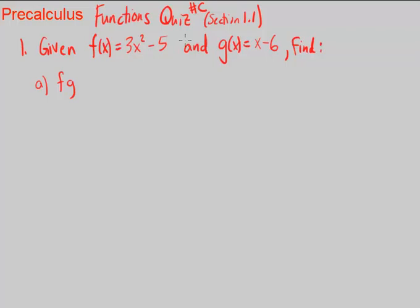This is the Pre-Calculus Functions Quiz from Section 1.1, Version C. Okay, so number one, we're given f(x) = 3x² - 5 and g(x) = x - 6.